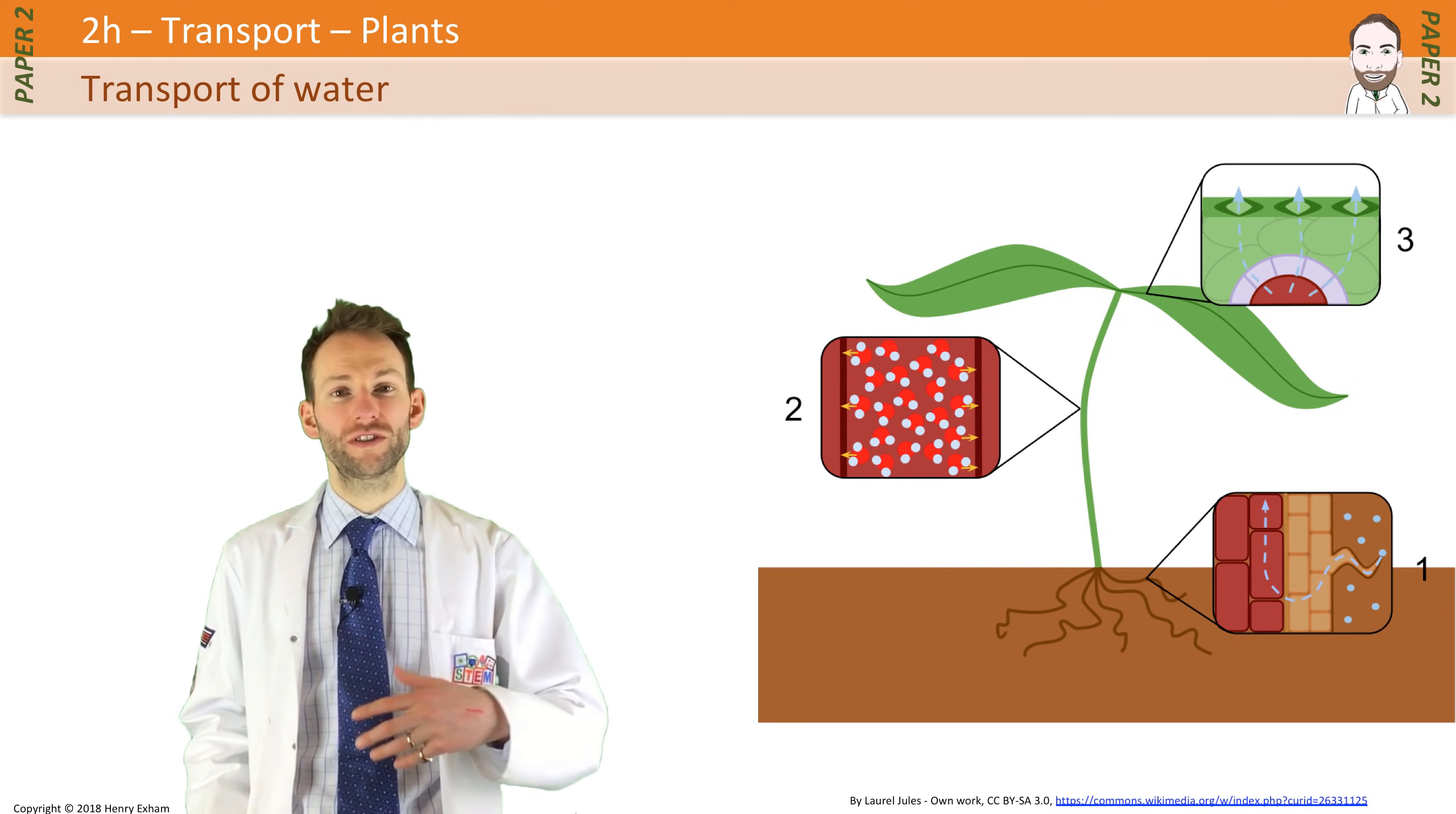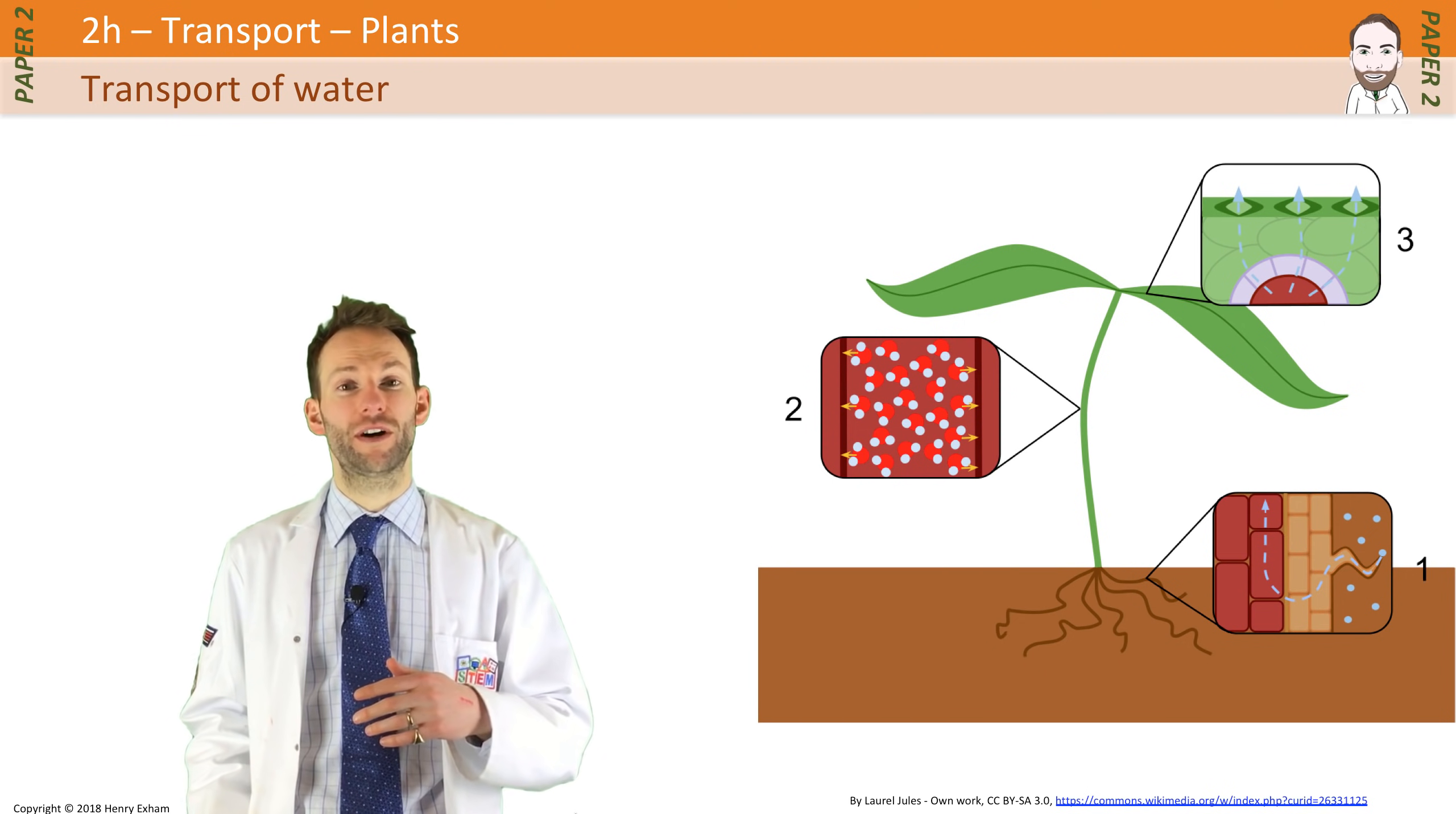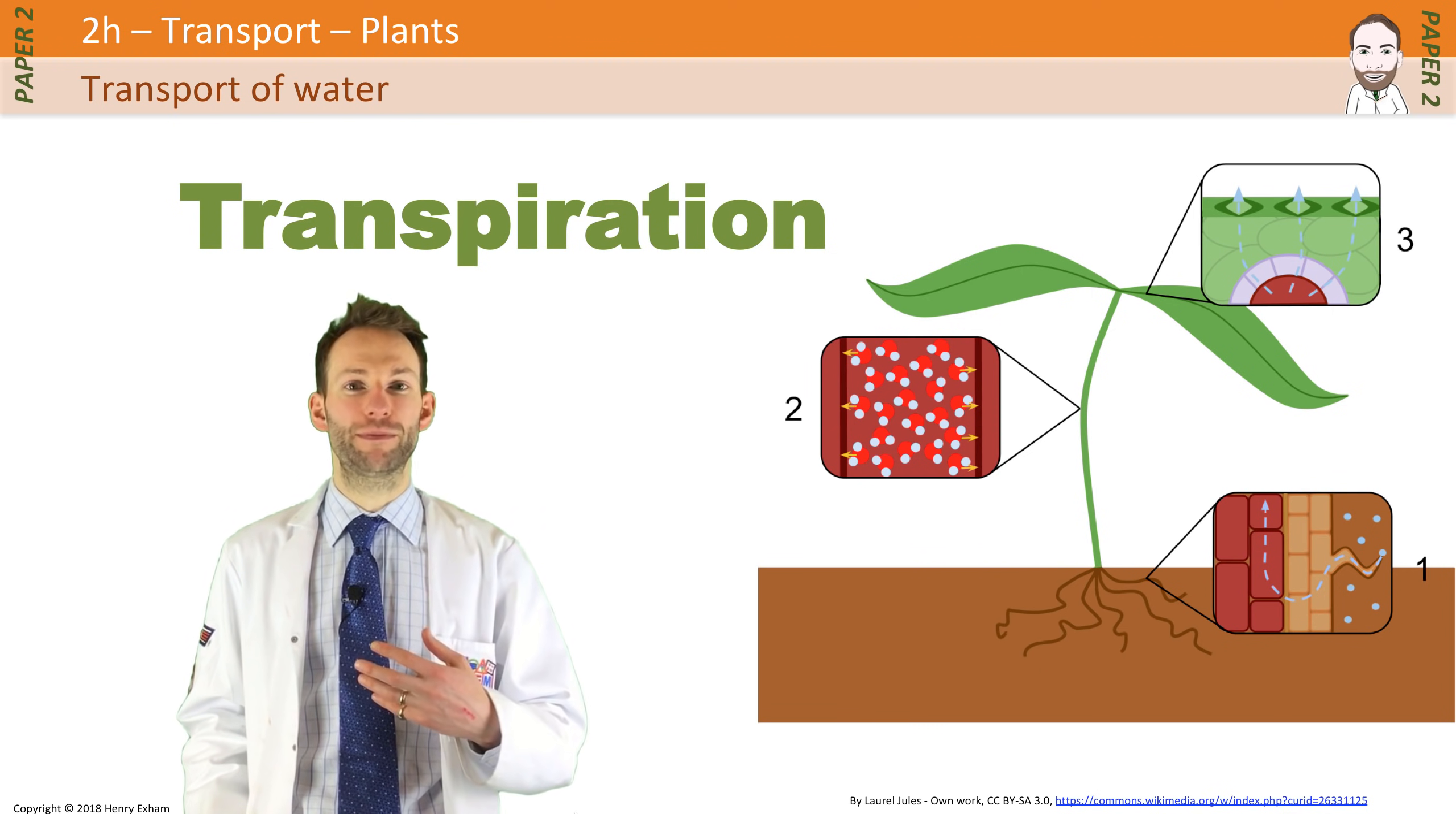So especially on hot days when there's lots of photosynthesis going on, really nice and sunny, all those little stomata will be open, and lots of gases will be able to come in and out. But as a consequence of that, water can also be lost via the stomata, and that is a process called transpiration. The water evaporates out, it doesn't drip out as liquid, it evaporates out by diffusion in the form of water vapor.